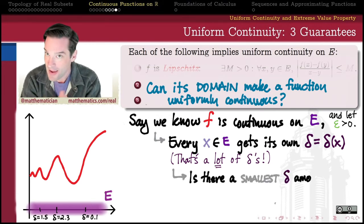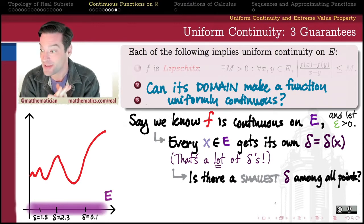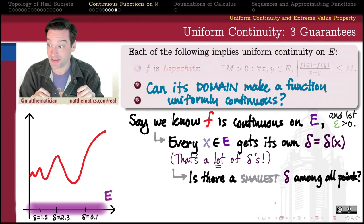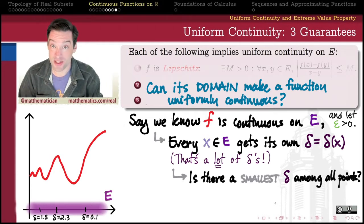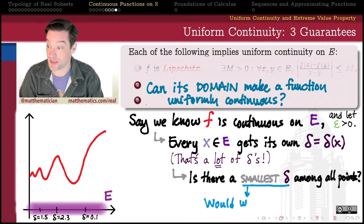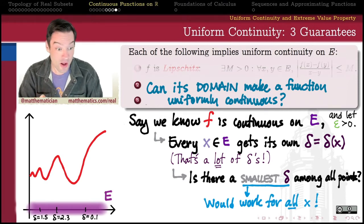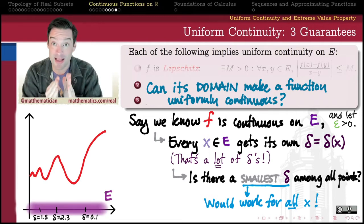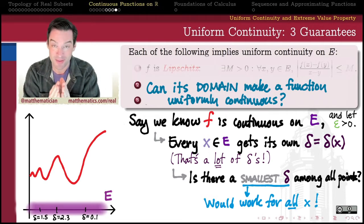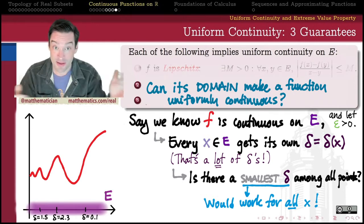Now, if I happen to get so fortunate as for there to exist a smallest delta among all possible points in my domain, then that smallest delta is going to be my Rosetta Stone. That smallest delta is going to be one that's going to work for all x. Because all x's that are delta close for that smallest delta are going to get their images within epsilon for every single x across the domain.